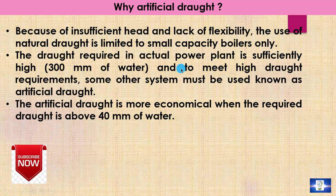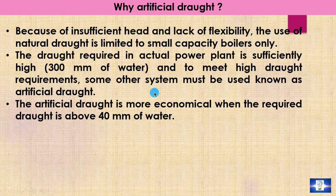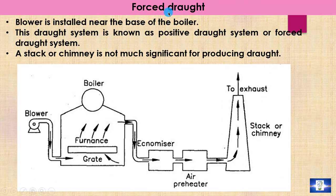In actual power plants, more draft — like 300 millimeters of water column — is required, which is not possible by natural draft. So basically, above 40 millimeters of water column draft, an artificial draft system is required. In the forced draft system, the blower or fan is installed very near to the furnace or grating system, and the chimney is not much significant for producing the draft because the fan or blower pressure is sufficient to maintain the draft.